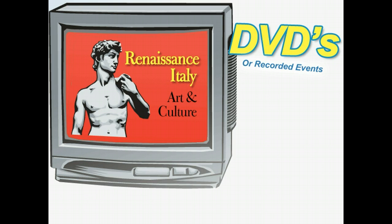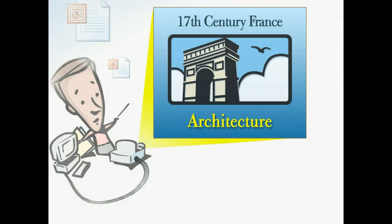If you're studying modern Italy, you could show recordings of news broadcasts reporting on Italian current events, such as natural disasters or elections. You can use an LCD projector to display images of artwork and architecture from 17th century France, and then evaluate how they reflected ongoing changes in culture and religion. You might also project a map of France using an overhead projector, and using an erasable marker, mark the locations of major cathedrals and castles, explaining their importance to nearby cities.